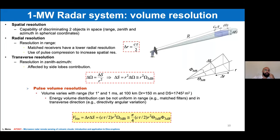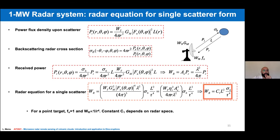When we talk about using radar to monitor a volcanic event, we talk about pulse volume resolution — the small volume detected by the radar in range. From this we can retrieve observables such as radar reflectivity and polarization related to the small volume.